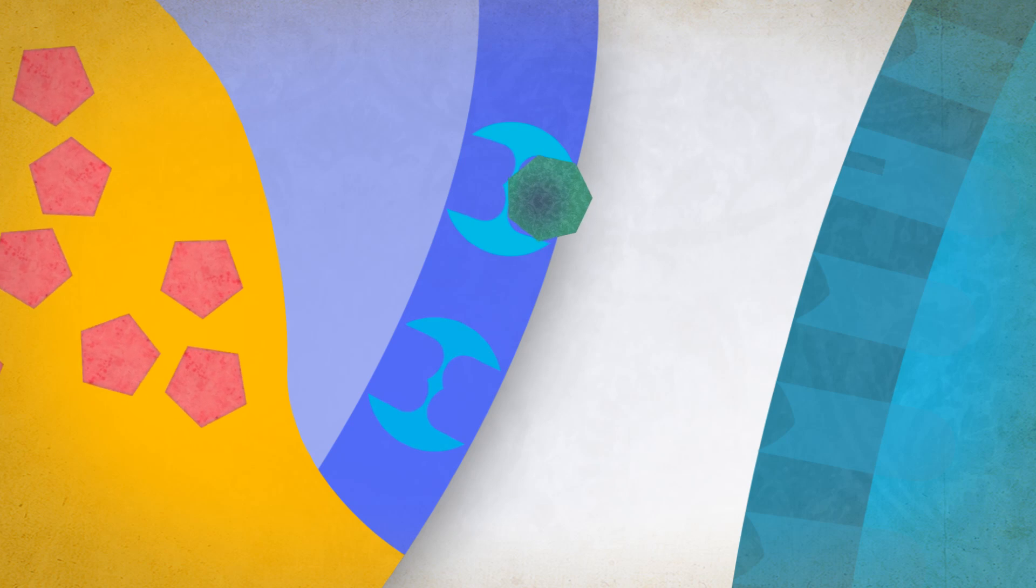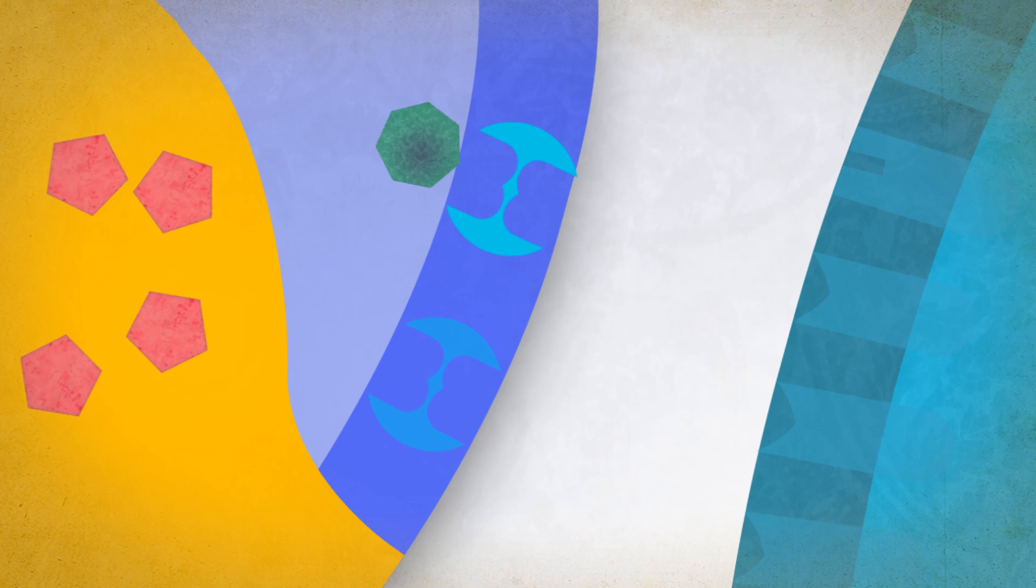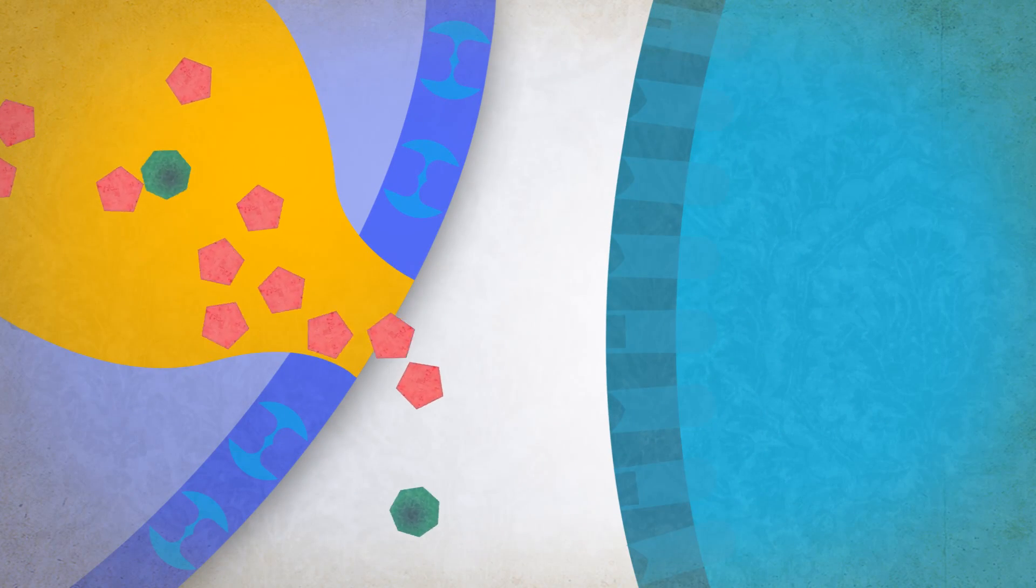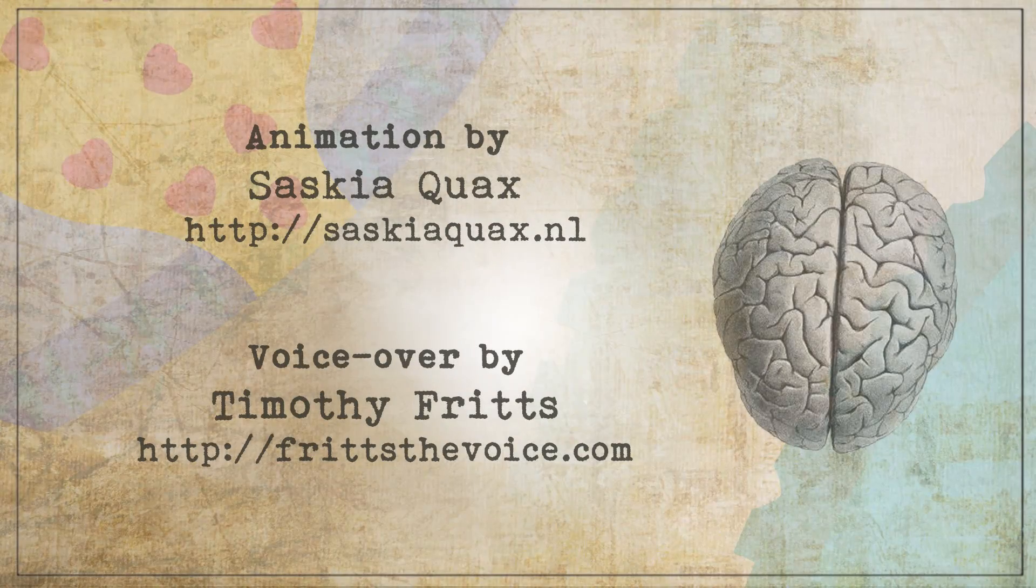MDMA causes the release of serotonin by entering the axon terminal through the reuptake transporters. Once there, it interacts with the vesicle, causing it to pour serotonin into the synapse.